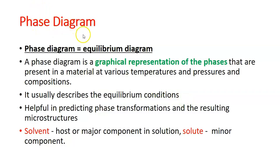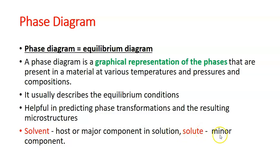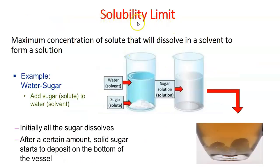A phase diagram is defined as an equilibrium diagram — a graphical representation of the phases present before, during, or after any kind of transformation in a material at various temperatures, pressures, and compositions. It describes equilibrium conditions and is very helpful in predicting phase transformations and the resulting microstructures. The solvent is the host or major component in the solution, and the solute refers to the minor component. The solubility limit is the maximum concentration of solute that will dissolve in a solvent to form a solution.